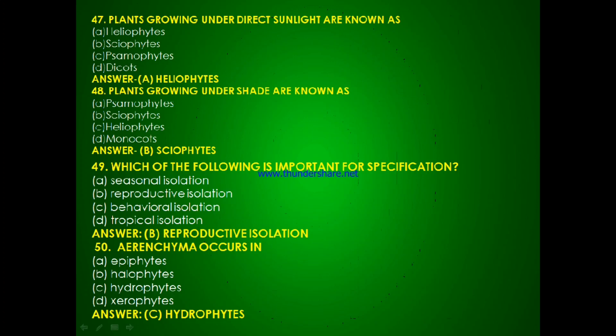Question 47: Which of the following is important for speciation — seasonal isolation, reproductive isolation, behavioral isolation or tropical isolation? The answer is B, reproductive isolation. Question 48 (last question): Aerenchyma occurs in — epiphytes, halophytes, hydrophytes or xerophytes? The answer is C, hydrophytes. Aerenchyma occurs in hydrophytes.